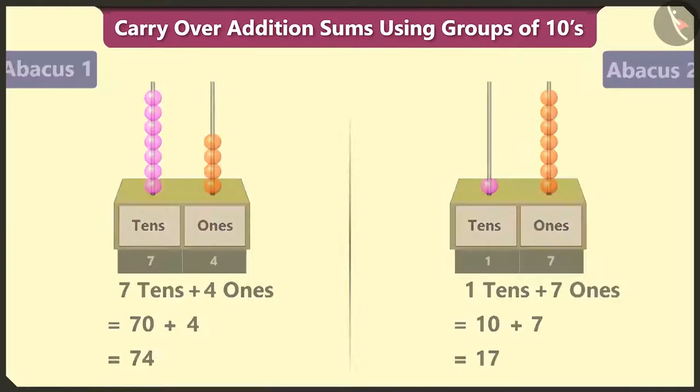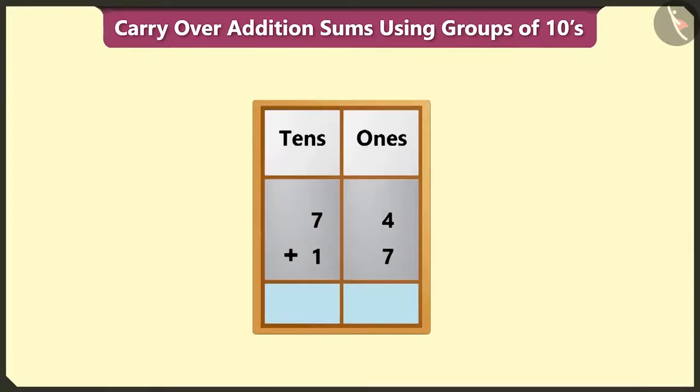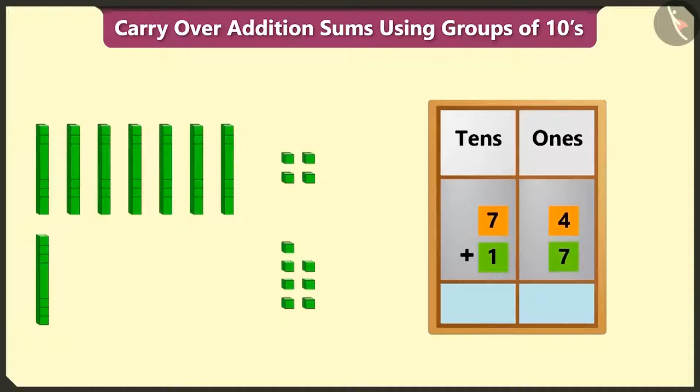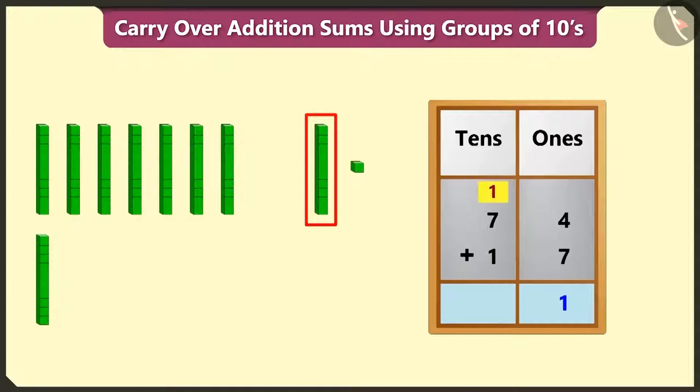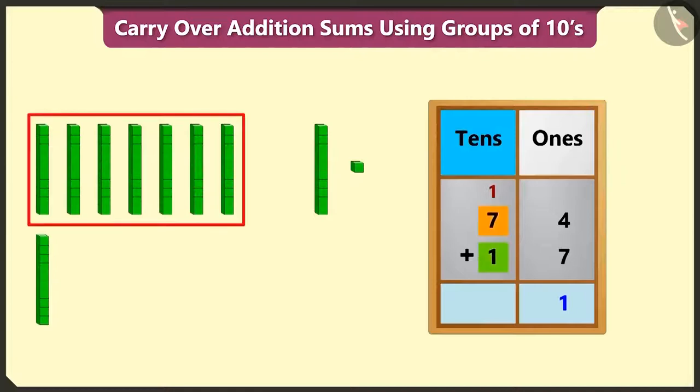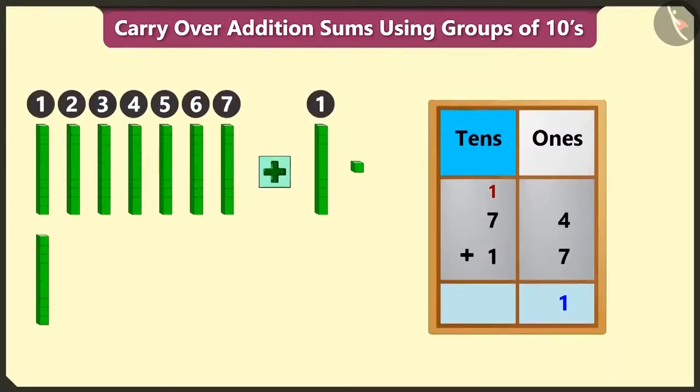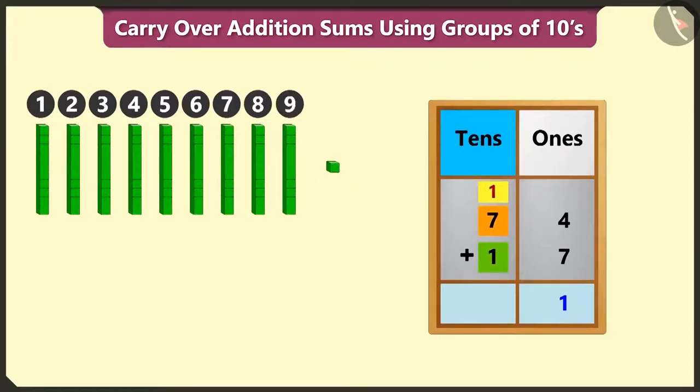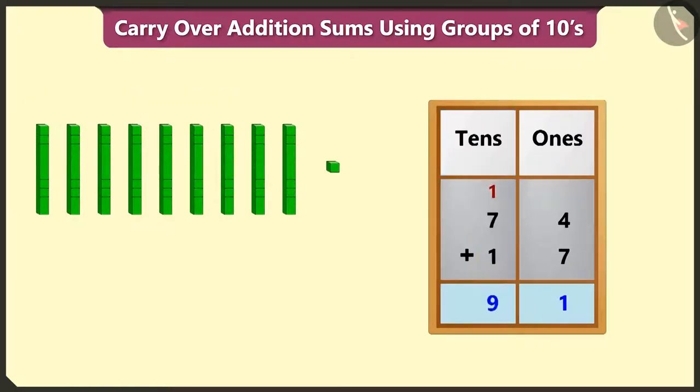But before that, we have to write both the numbers in the ones tens boxes. Yes. After writing both the numbers in this way, in the ones tens boxes, adding 4 and 7 in ones box makes 11. 11 means 1 tens and 1 ones. We have to write 1 ones in the ones box and carry over 1 tens. Now, we have to add the numbers in the tens box to the carryover number. Adding 7 to the carryover number, 1 will equal 8 and adding 1 to 8 will equal 9. So, we have to write 9 in the tens box. 74 added to 17 will give us a total of 91.